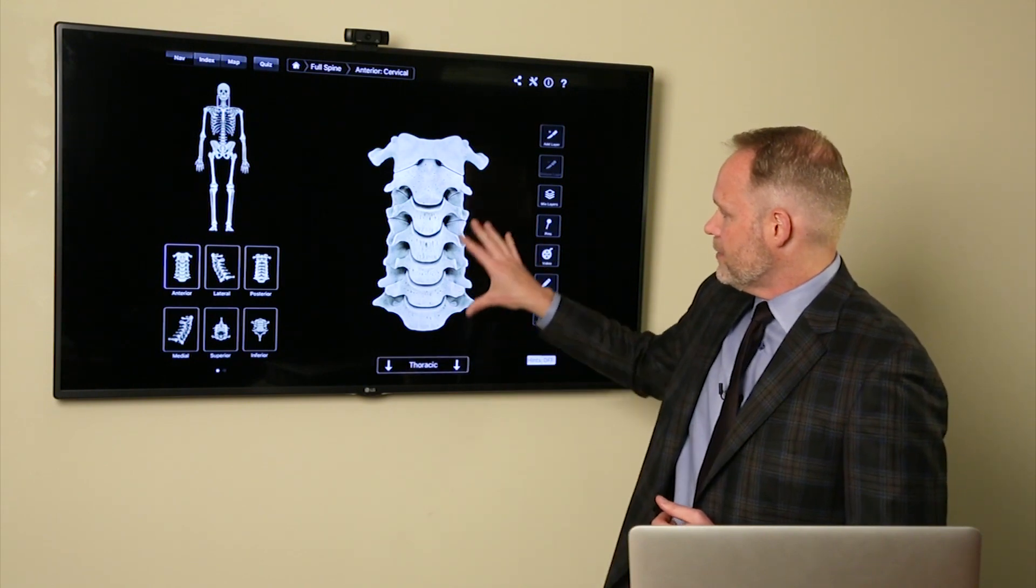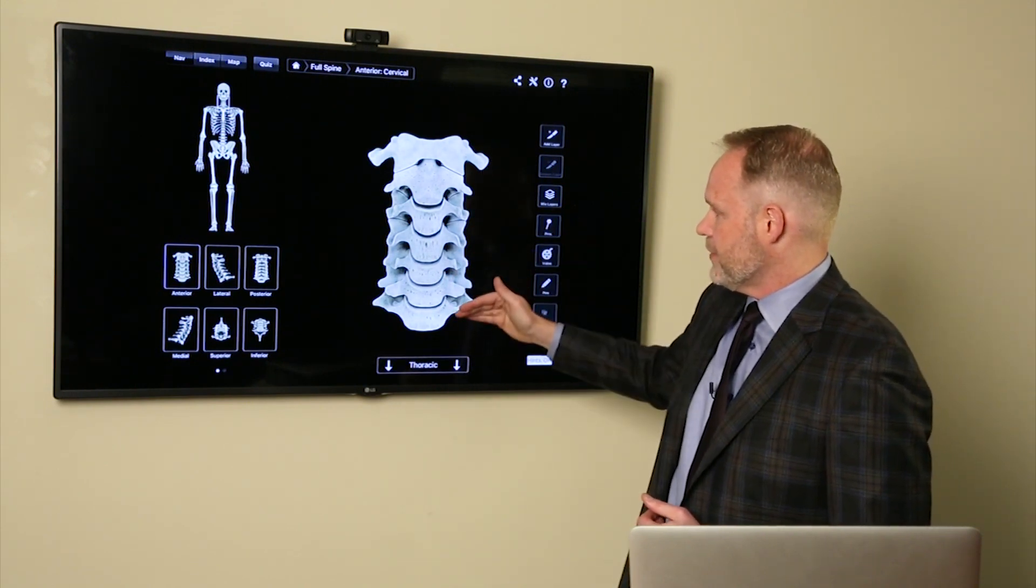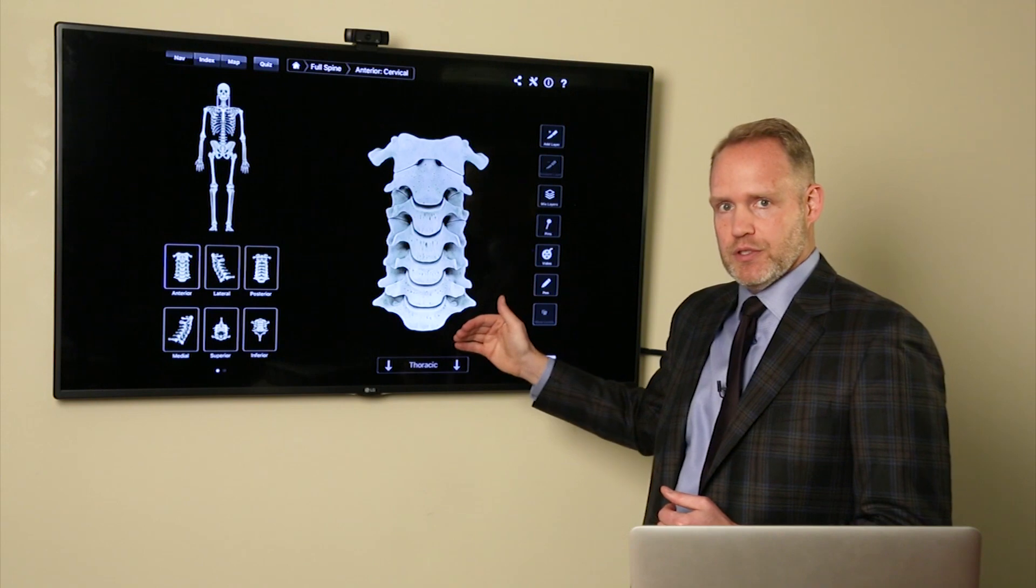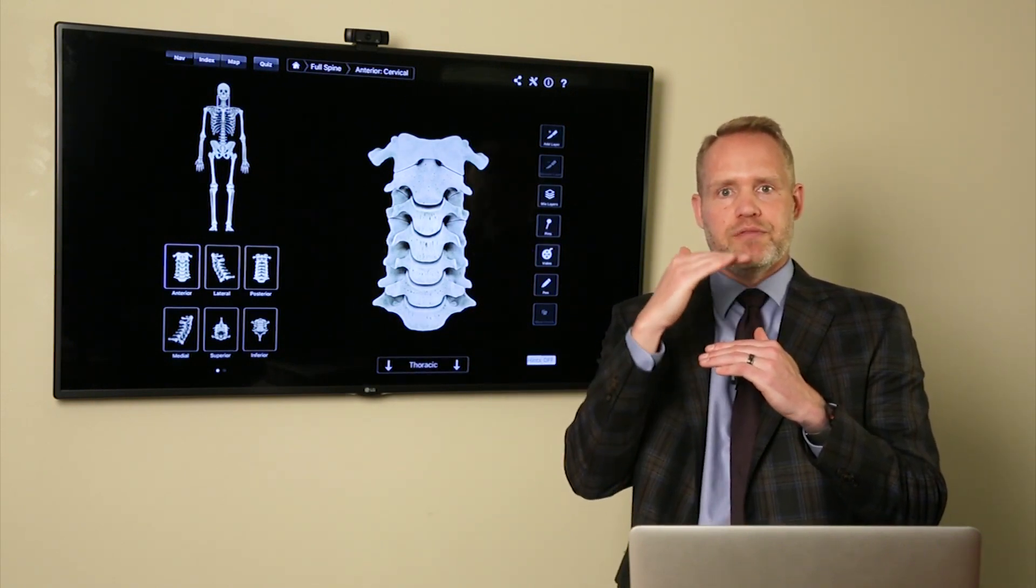And you can see the neck has several levels. There's seven, in fact, in the cervical spine. So there's seven different levels or layers of bone.